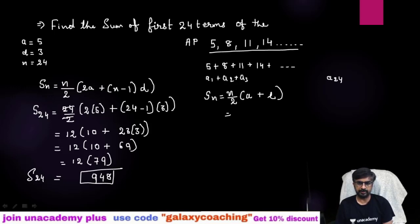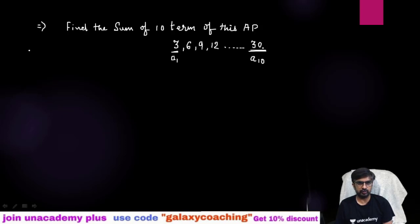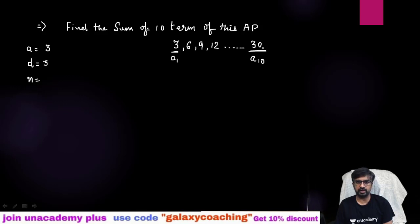Sometimes you will be able to solve with the shortcut also. Let me solve the next question so you can easily understand. Find the sum of 10 terms of this AP. You need to find out the sum of the 10 terms of this AP, and they have already given you the 10th term: a10 = 13... a = 3. The difference is 6−3 = 3, and 9−6 = 3, so d = 3. n = 10.